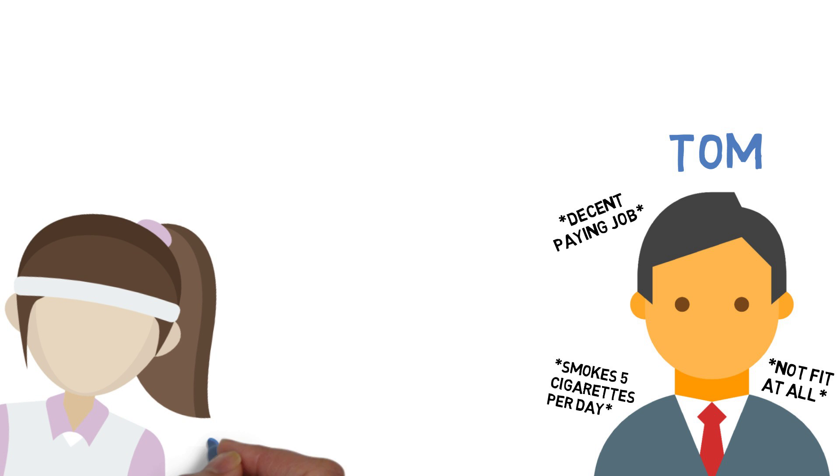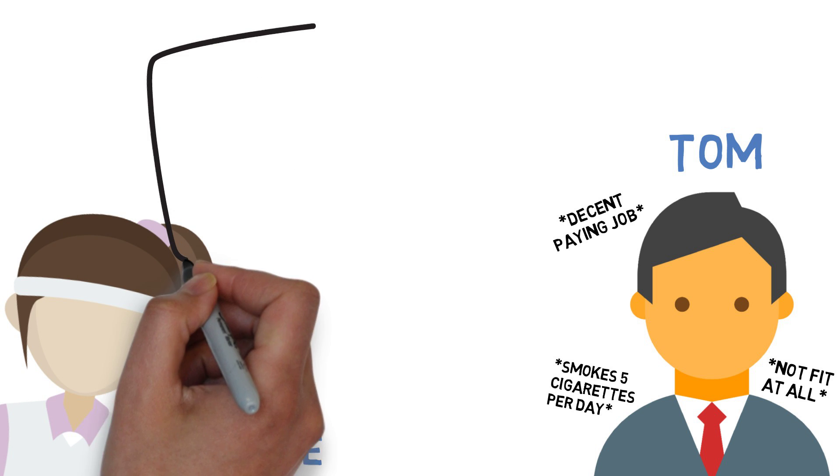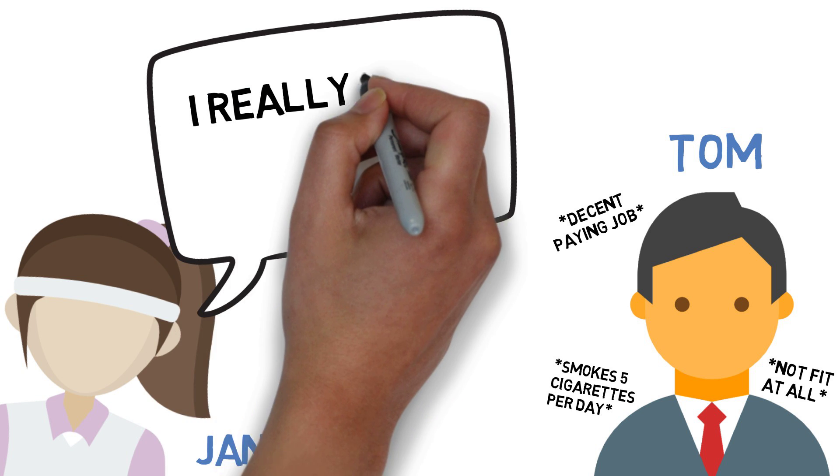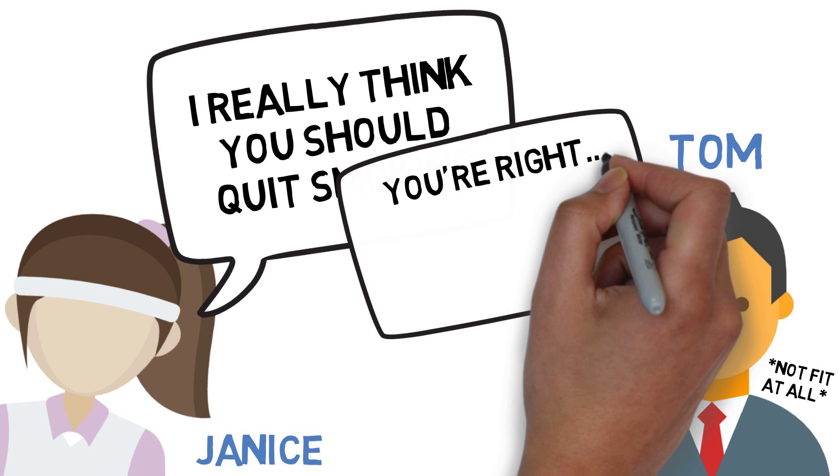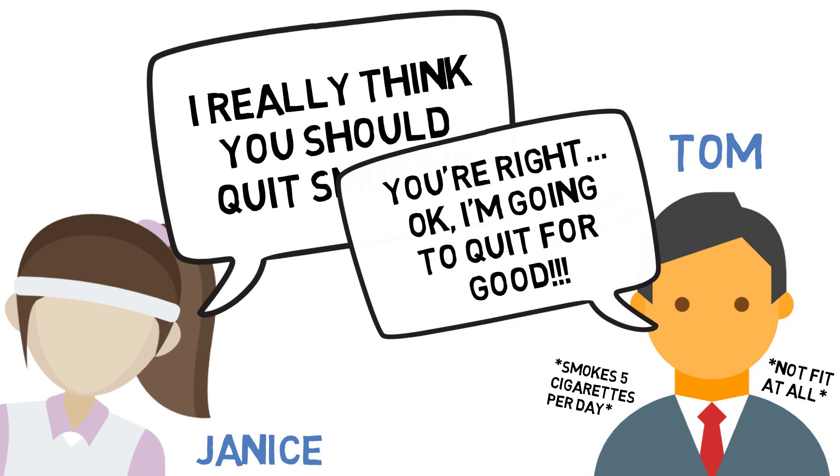Eventually, Tom meets a girl. Her name is Janice, and they really hit it off. But Janice was really, really against smoking and wanted Tommy to quit. Tom was in love, and he knew that she was right. So he decided to give it his all and quit for good.